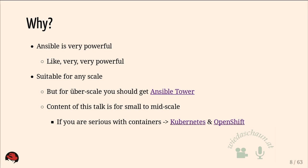Kubernetes and OpenShift are orchestrators so they natively work with multiple nodes and can automatically scale your application. Under the hood there is still Docker — still the same containers we'll be working with, but with less manual work. OpenShift is built on top of Kubernetes so everything Kubernetes knows, OpenShift knows as well. OpenShift also adds features for developers such as integrated registry, build service, and pipelines — so you can configure it to automatically build, test, and push to production when you push code to Git.